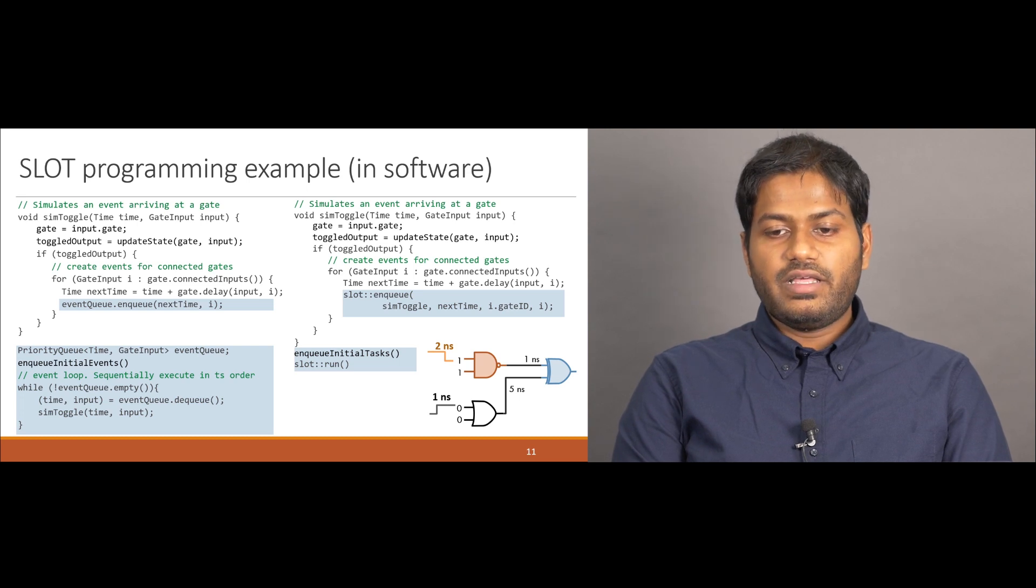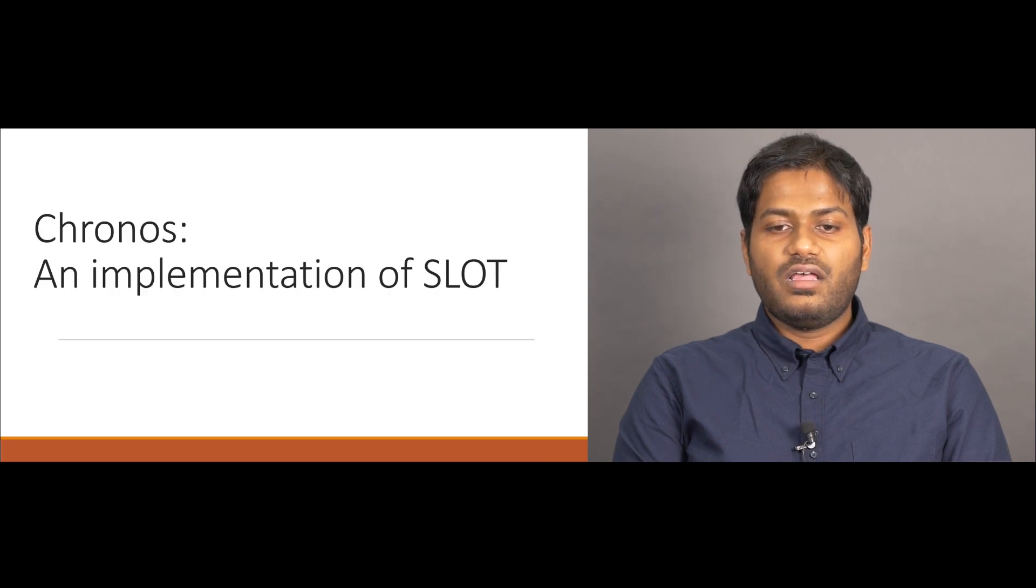A SLOT implementation can choose to run these tasks sequentially or run them out of order to extract parallelism. Kronos, our implementation of SLOT does the latter, where tasks are speculatively run out of order.